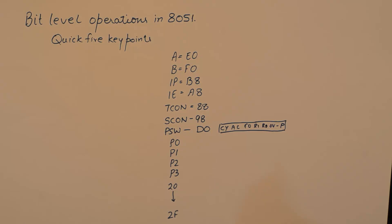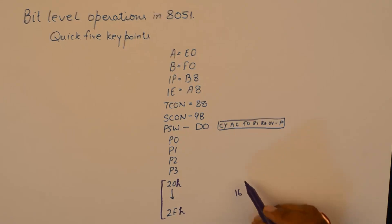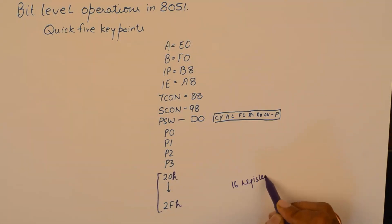There are two areas in 8051 which have registers with individual bit addresses. Now this is very important. The area in the RAM from 20H to 2FH, there are 16 registers whose bits are assigned individual addresses. I've discussed that in the tutorial where I discuss the structure of memory of 8051.